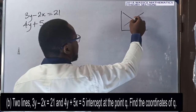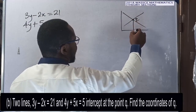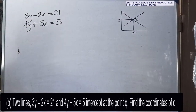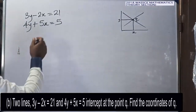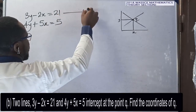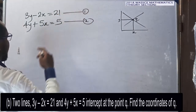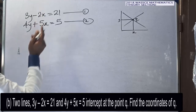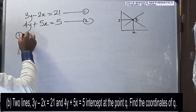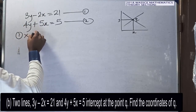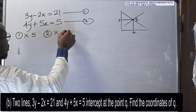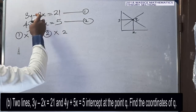Find the coordinates of Q. The coordinates of Q mean when I read it on the graph, the x-value and the y-value. So I'm going to solve this simultaneously, calling the first equation one and the second equation two. I can decide to eliminate x.